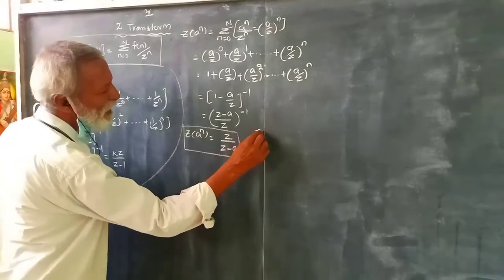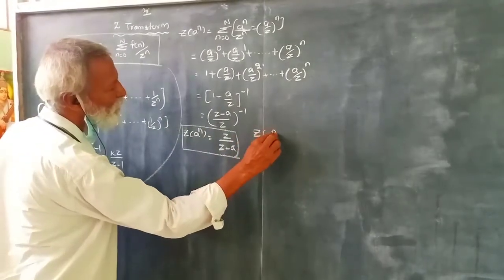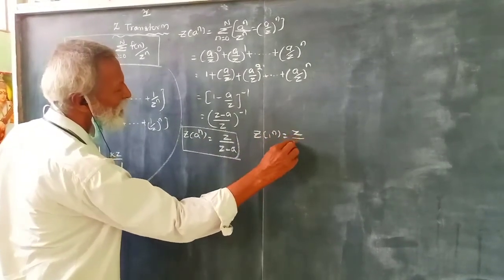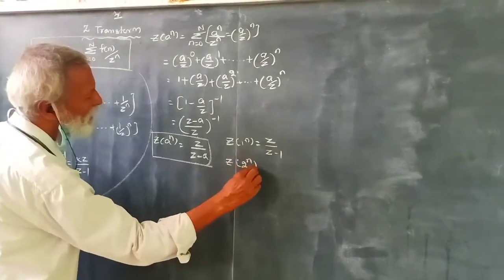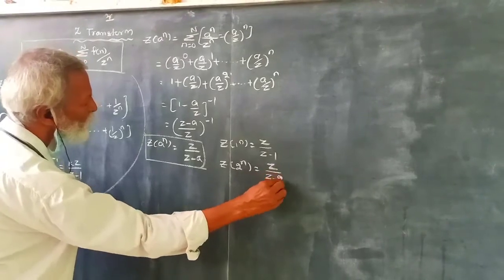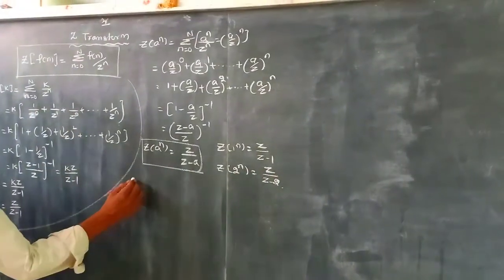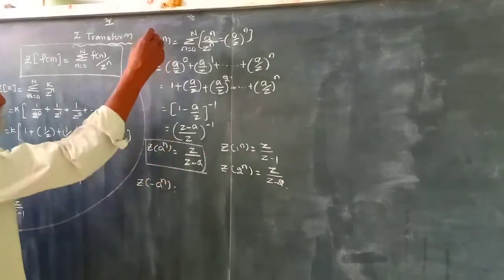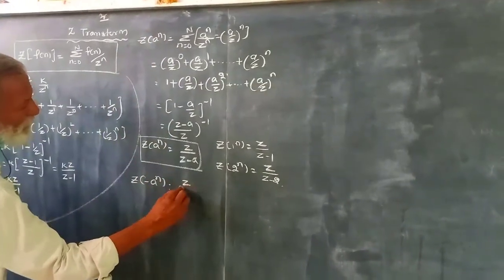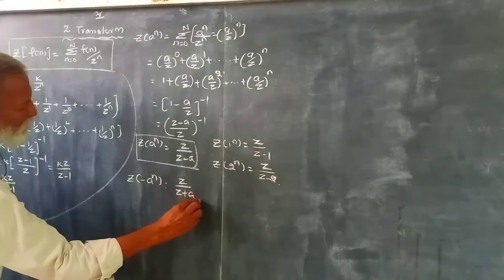Z transform of 1^n is z/(z-1). Z transform of 2^n is z/(z-2). Z transform of (-a)^n is z/(z+a).